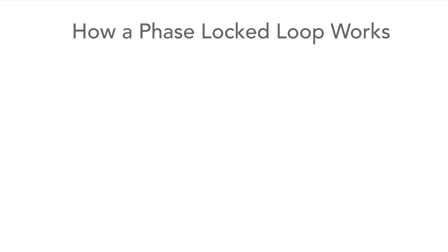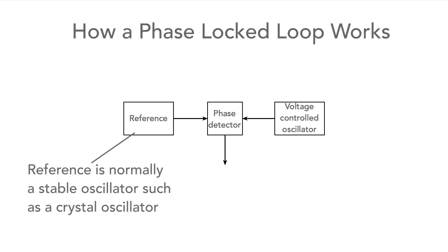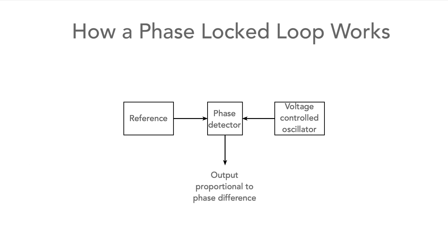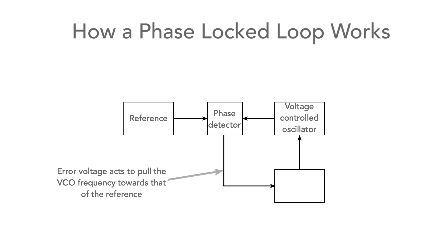An electronic circuit can be set up so that the signals from a voltage-controlled oscillator and a stable oscillator, such as a crystal oscillator, are fed into a phase detector. It can be seen that the output will be proportional to the phase difference between the two signals. The output from the phase detector is effectively an error voltage, and if this is fed back in the right sense to the control terminal of the VCO, it will act to pull the VCO frequency towards that of the reference.